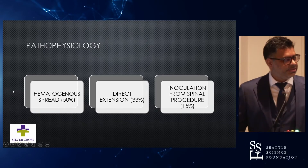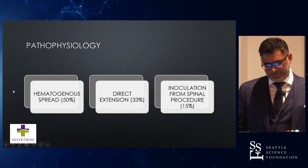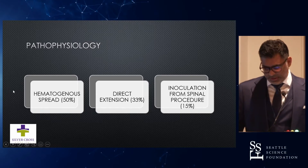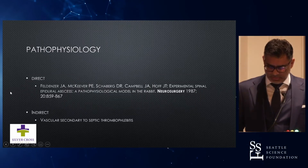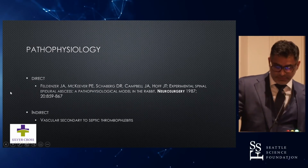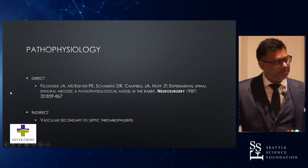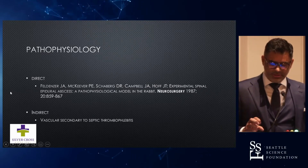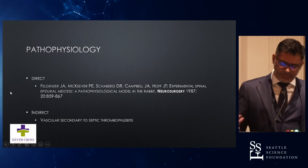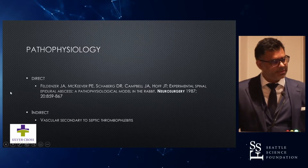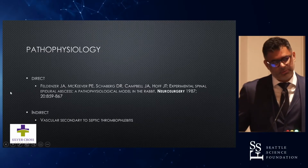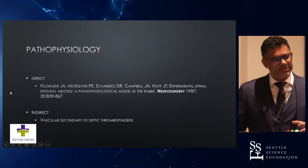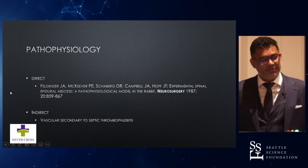Understanding the pathophysiology helps guide management. Routes include hematogenous spread, direct extension from psoas abscesses or vertebral body osteomyelitis, and inoculation from spinal procedures. Studies by Felddenzer using a rabbit model showed direct inoculation with decompression supports direct compression of the spinal cord. However, post-mortem autopsies have shown an indirect vascular component — thrombophlebitis — that can cause worsening complications and contributes to the insidious neurologic decline seen in these patients.